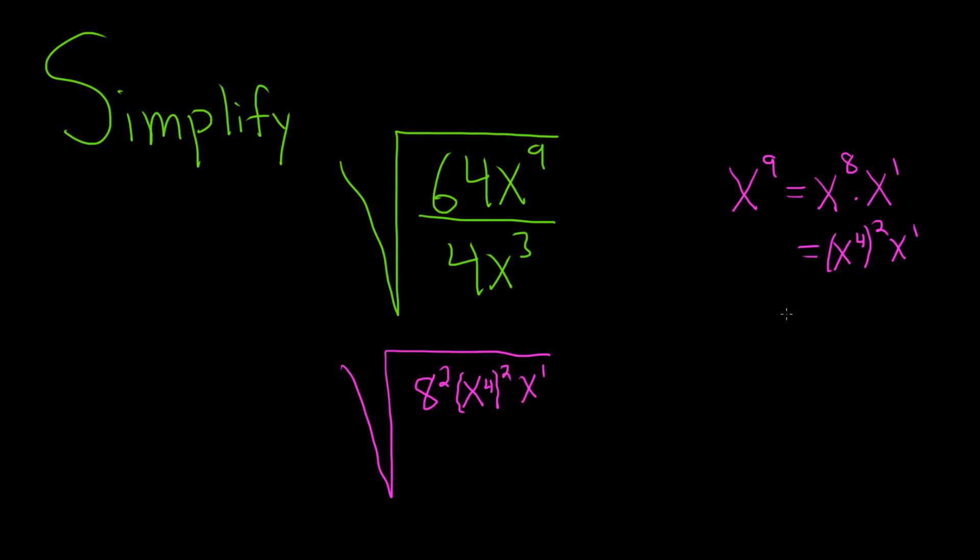And if you don't get it right away, like say you did x to the 9 equals x to the 4, x to the 5, and then you dealt with this, you would still have this, and hopefully you would see that you can keep going later and then simplify it later. So if you don't get them all perfectly simplified at first, just keep working through it, and eventually you will.